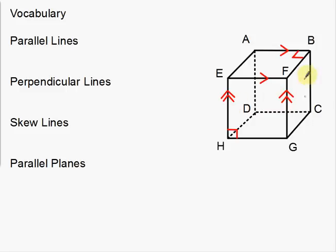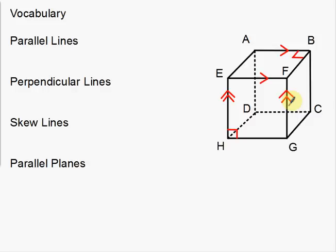We're going to do this with a cube. Notice the red arrows — those mean that those lines are parallel. That's some of the parallel notation we use. So AB and EF are parallel. The double arrows indicate a different set of parallel lines: EH and FG.